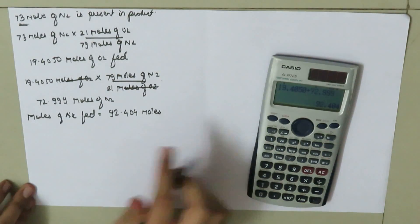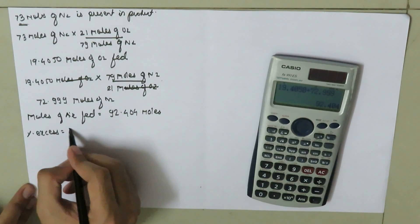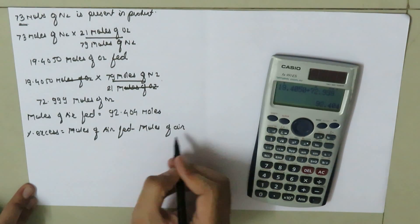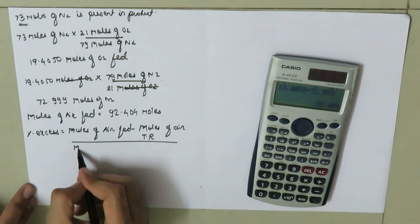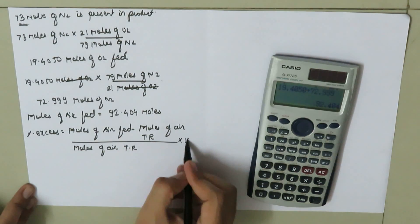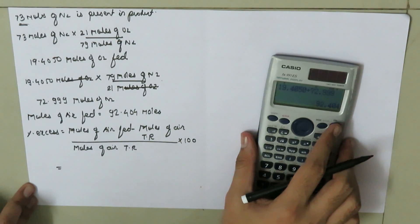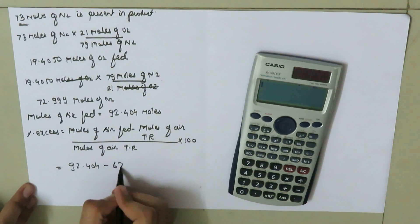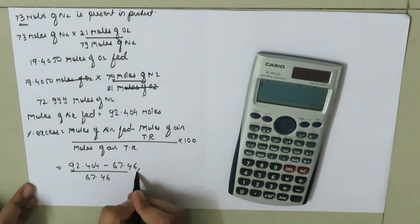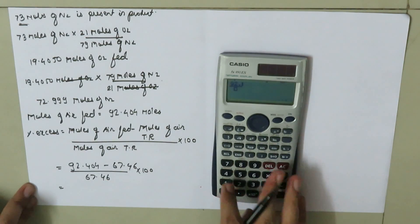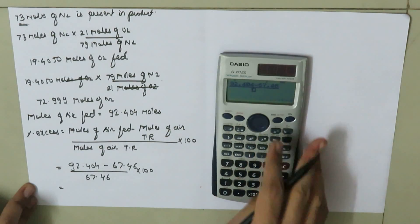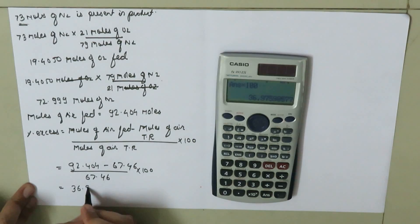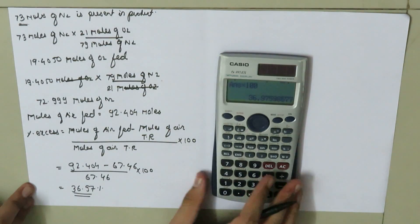Now we calculate the percent excess air: (92.404 − 67.46) / 67.46 × 100 = 36.97% excess air fed to the reactor.